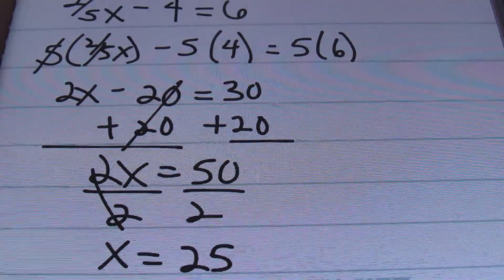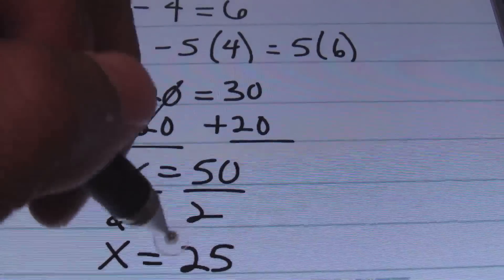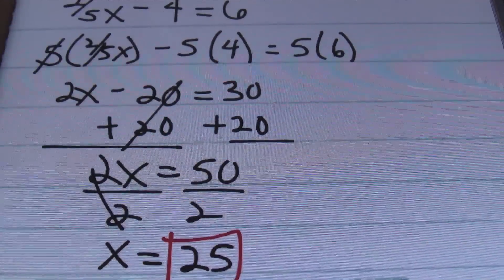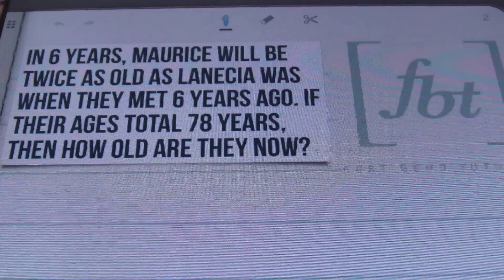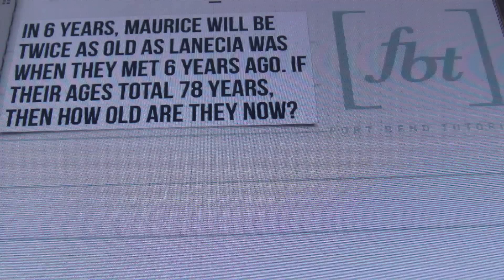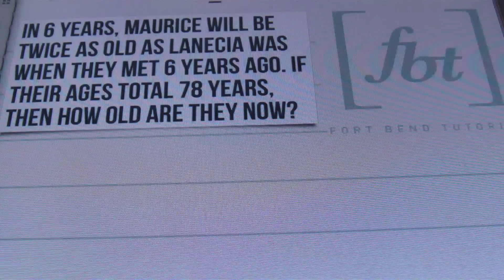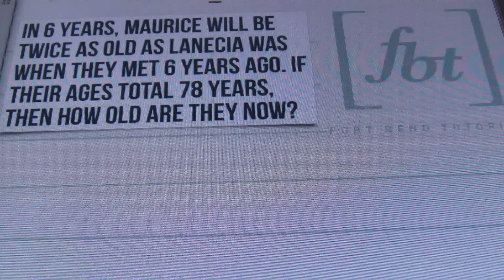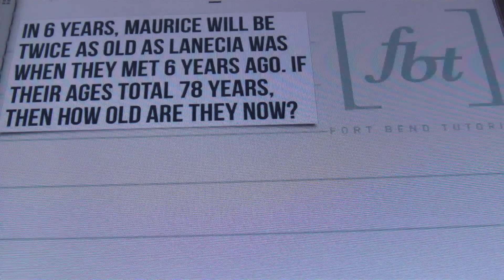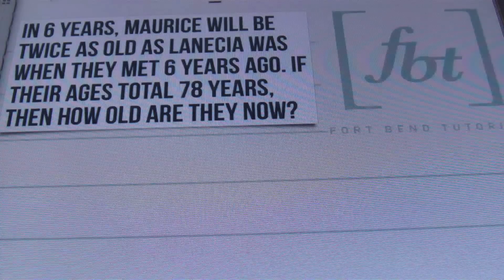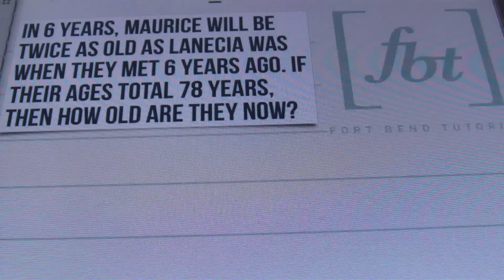So George's age is twenty-five years old. That's problem number one. Let's move on to our next problem. In six years, Maurice will be twice as old as LaNicia was when they met six years ago. If their ages total seventy-eight years, how old are they now?